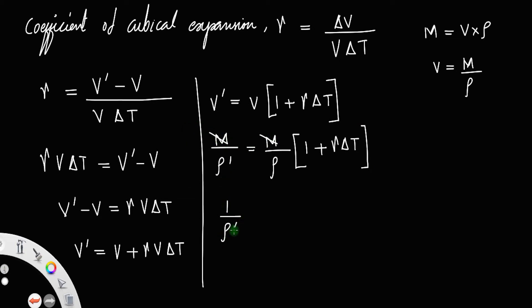So 1 by final density equal to 1 by rho into 1 plus gamma delta T. If you take the reciprocal on both sides, you will get rho dash is equal to rho into, this will go to the denominator, that is 1 by 1 plus gamma delta T.